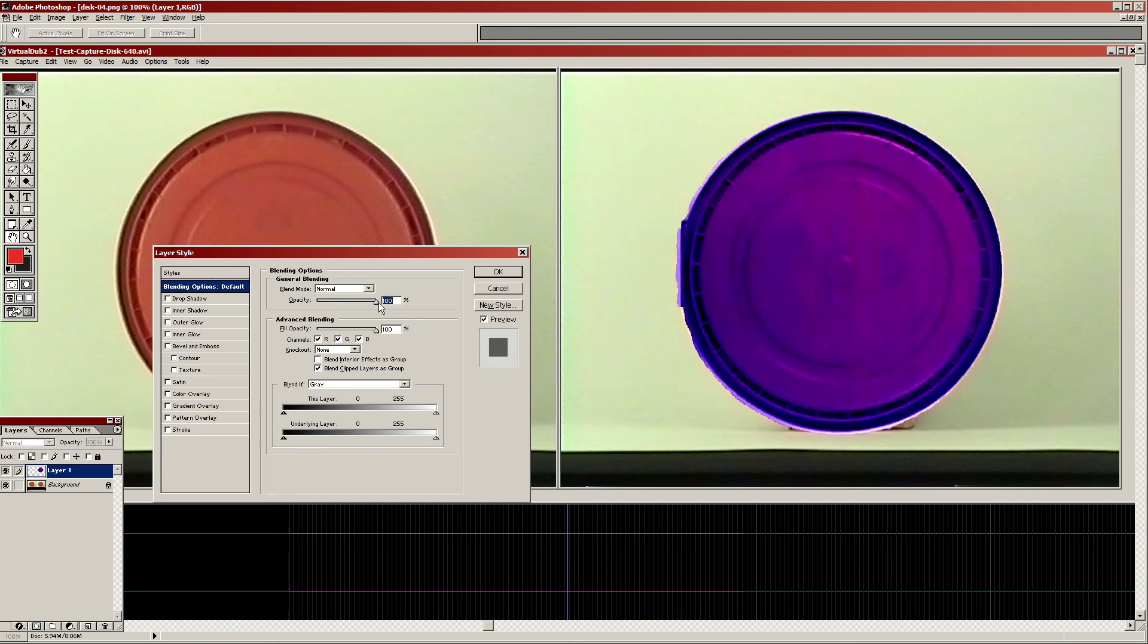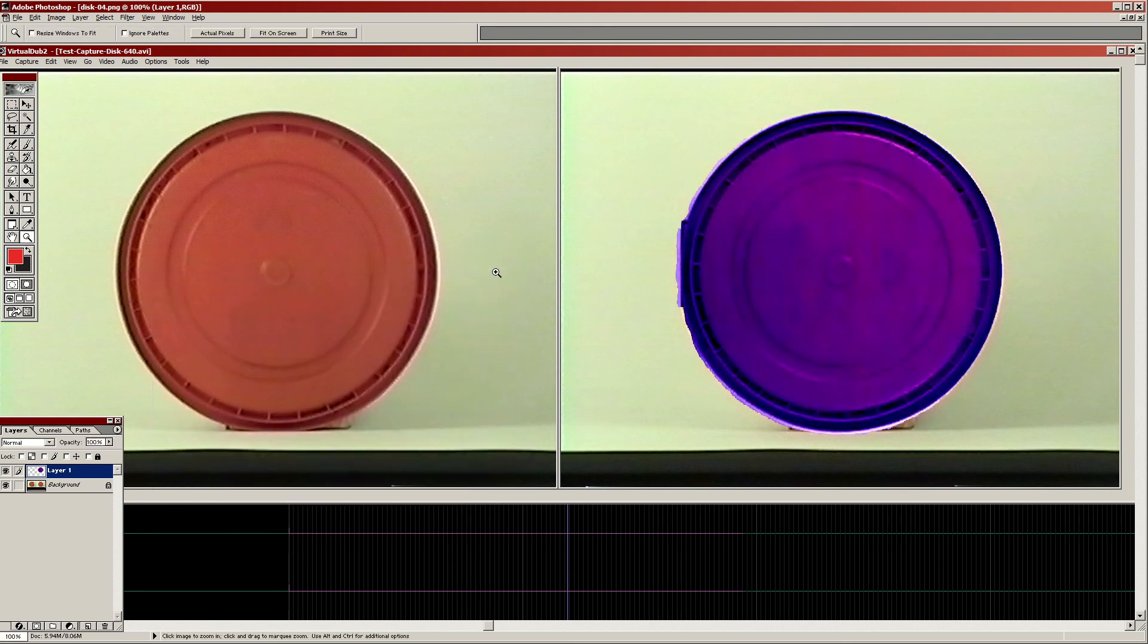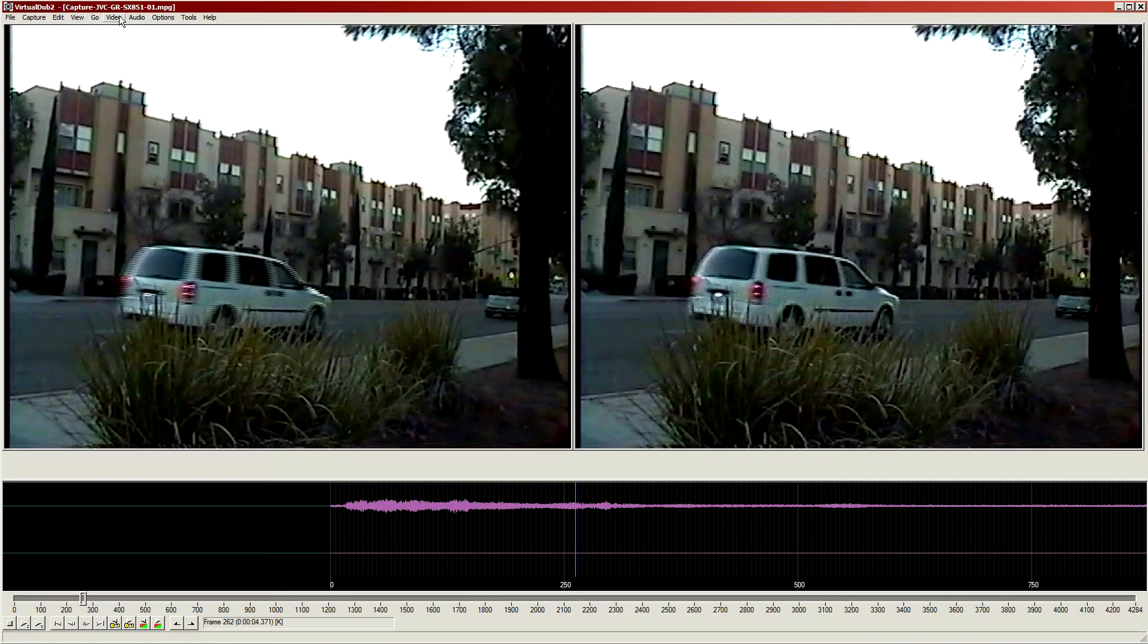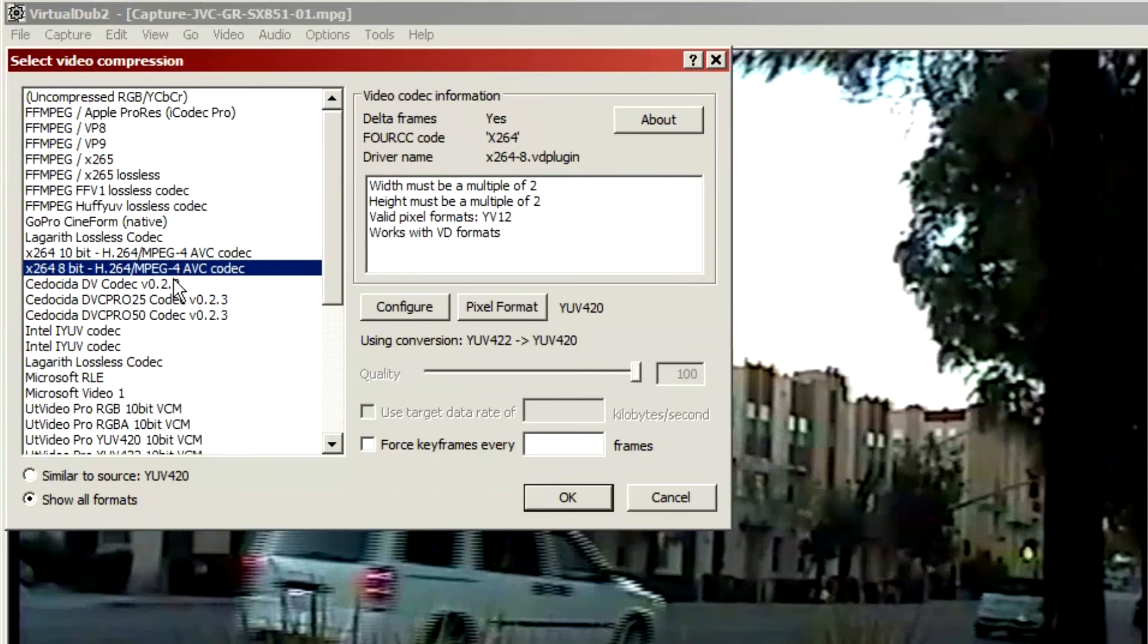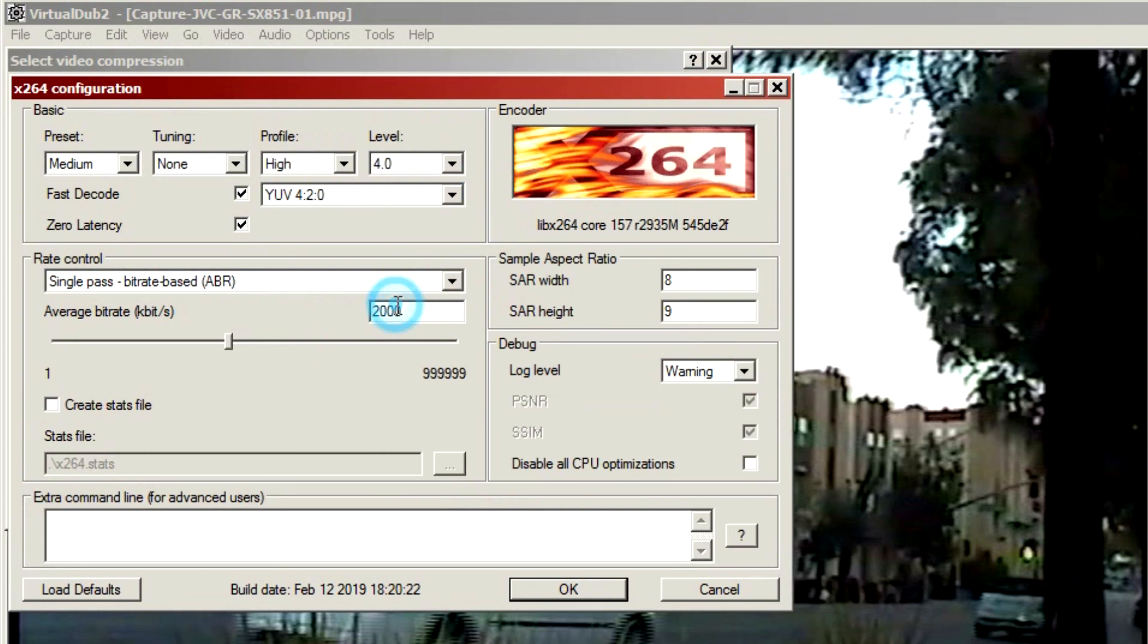This frame size is not valid for DVD video, but it works great for YouTube upload. When you create a video, say to upload it to YouTube, don't forget to specify pixel aspect ratio in the encoder settings.